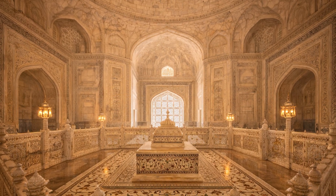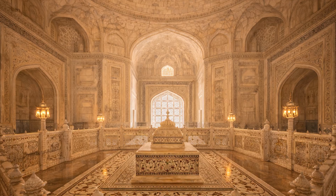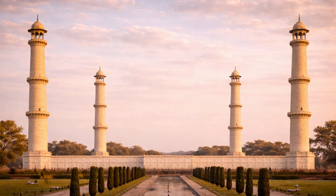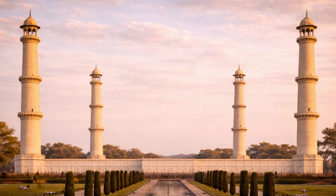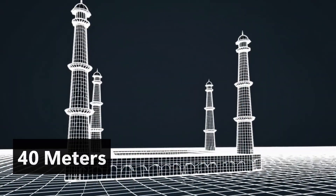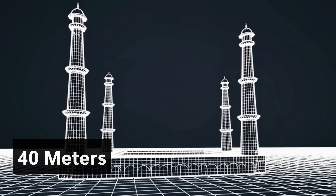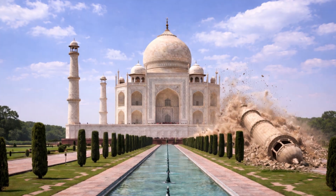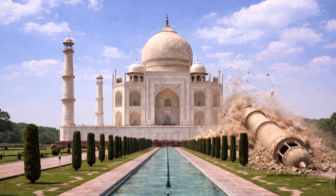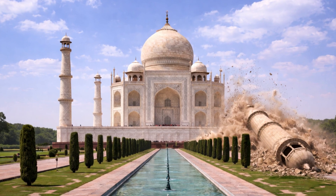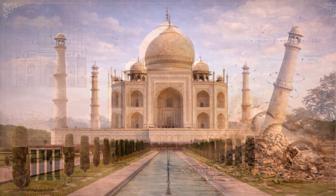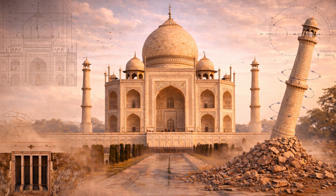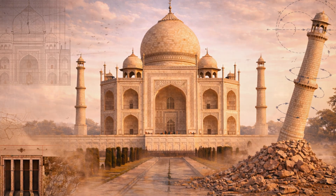Directly below the dome rests Mumtaz Mahal. Four tall minarets stand around the tomb, each more than 40 meters tall. They are slightly tilted outwards — done on purpose so that if a minaret were ever to fall, it would fall away from the main tomb. This shows how carefully the Taj Mahal was designed, with beauty and safety considered together.